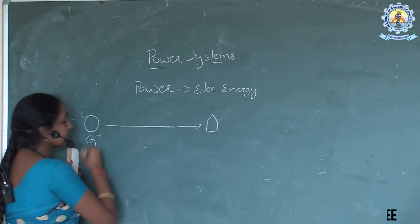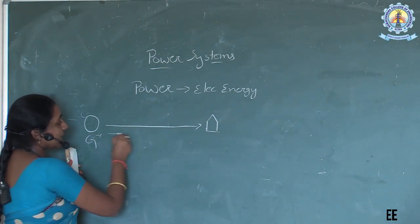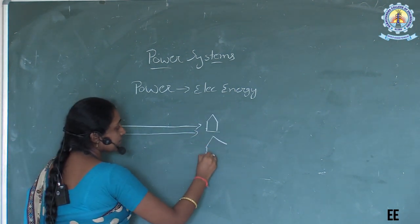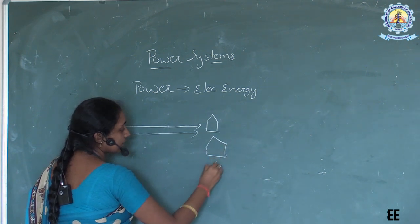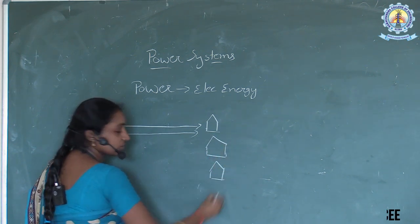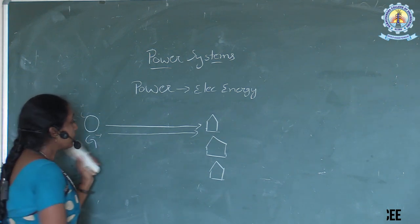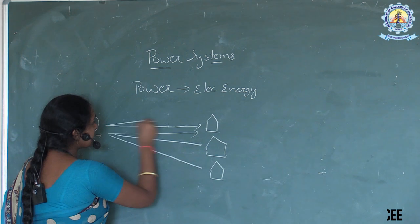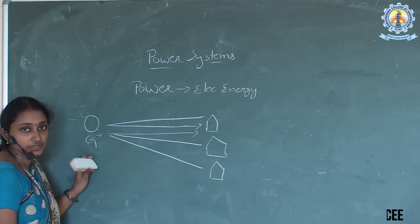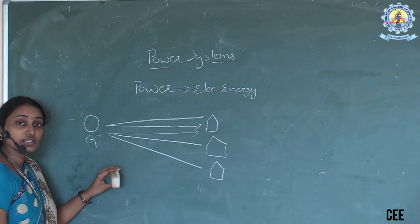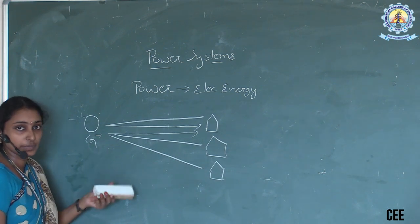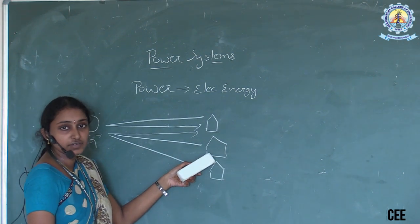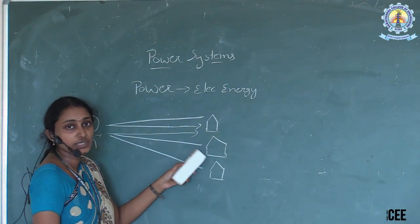That means generating that power, we have to transmit that power to our load end. There are different houses in a colony, different loads in any section. So we have to transmit the power to all the consumers — that means we have to distribute that power to the consumer end based on their requirement. And next is how we can use the power, which comes under the utilization section.